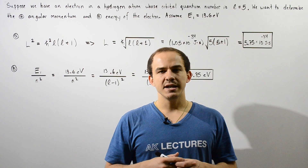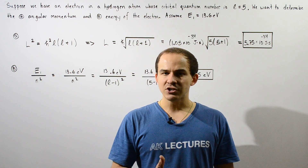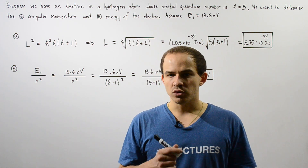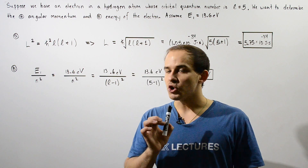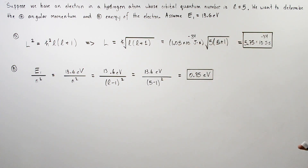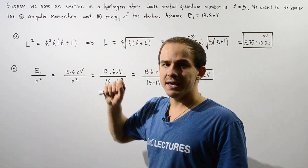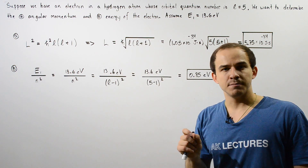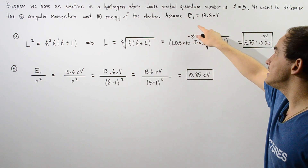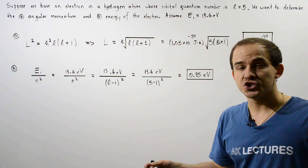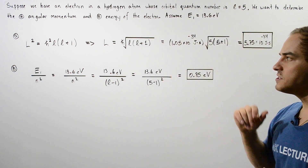Let's examine an example dealing with determining the angular momentum and energy of an electron within a hydrogen atom. Suppose we have an electron inside a hydrogen atom whose orbital quantum number L is equal to 5. We want to determine what the angular momentum is in part A and what the energy is in part B, assuming the energy of our electron is equal to 13.6 electron volts when the principal quantum number N is equal to 1.